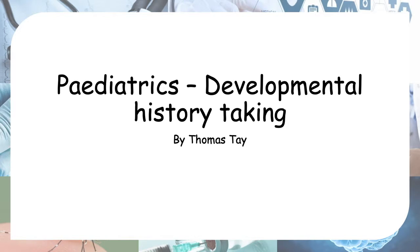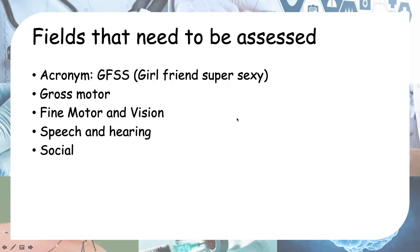Hello everyone, today we'll be looking at how to take a developmental history in pediatrics. In development there are four fields that need to be assessed in a child: gross motor, vision and fine motor, speech and hearing, and social. You can remember these using the acronym GFSS.